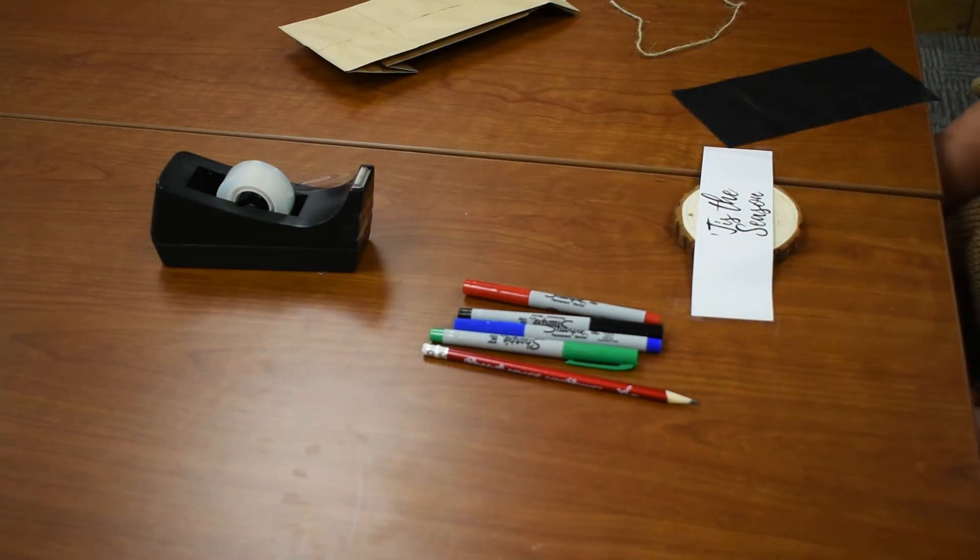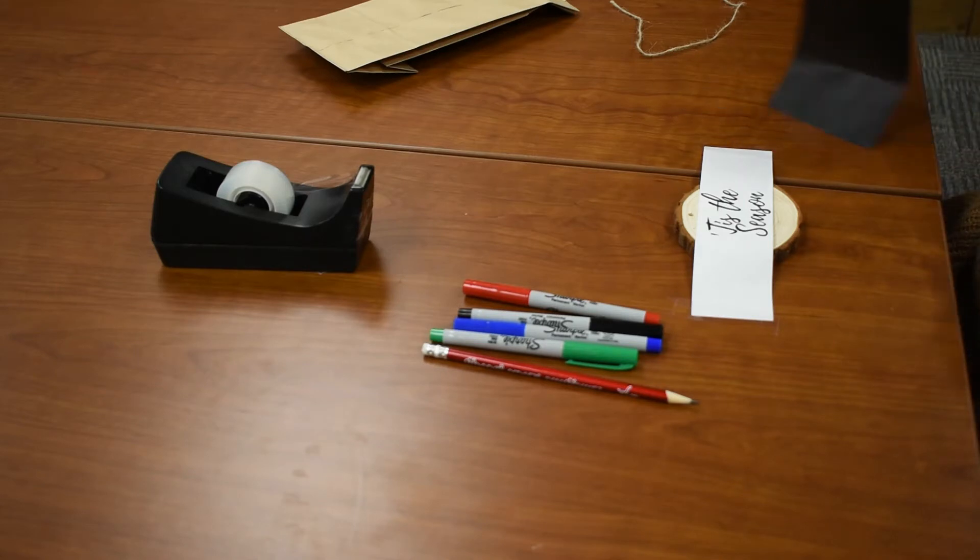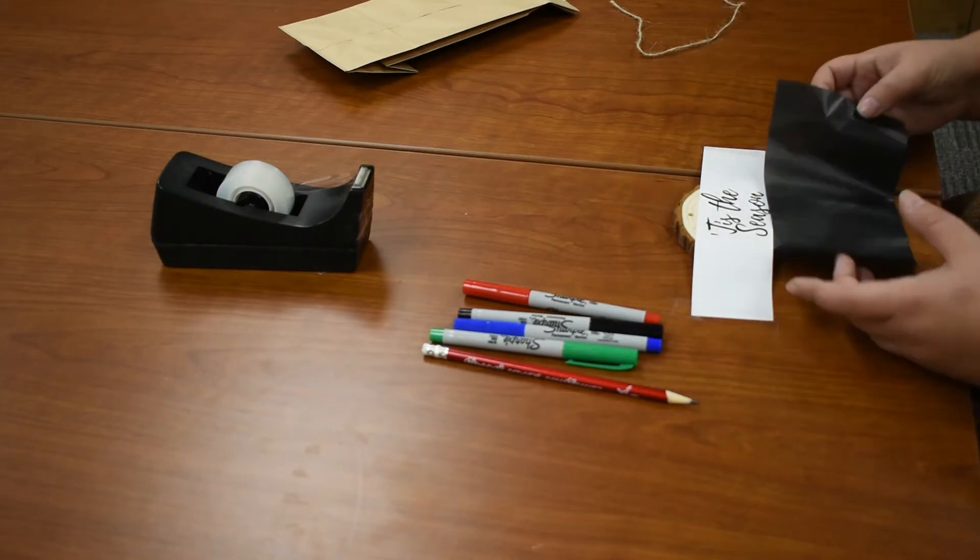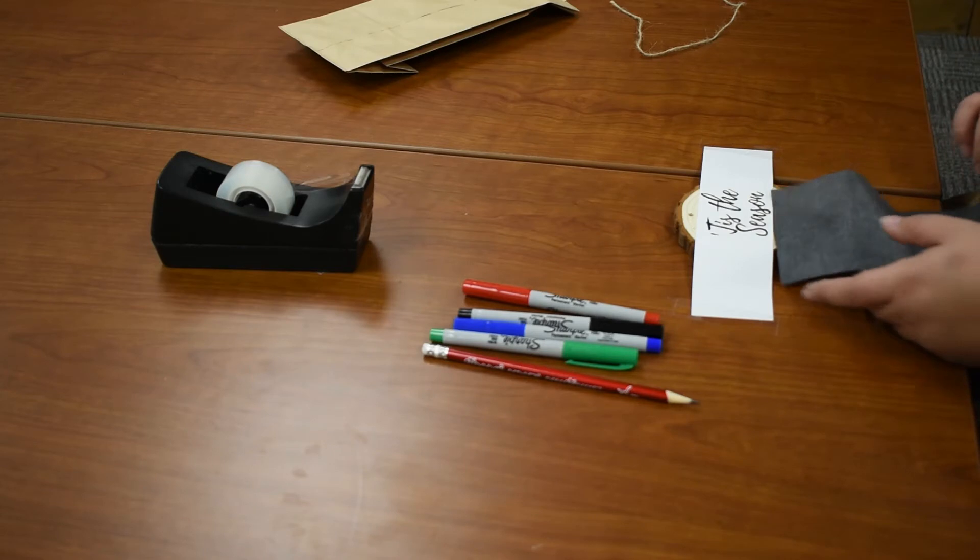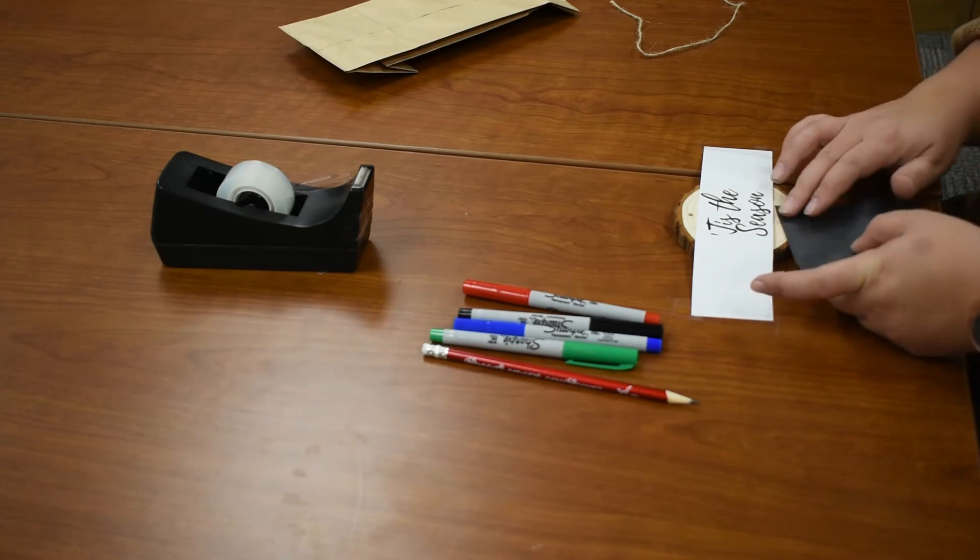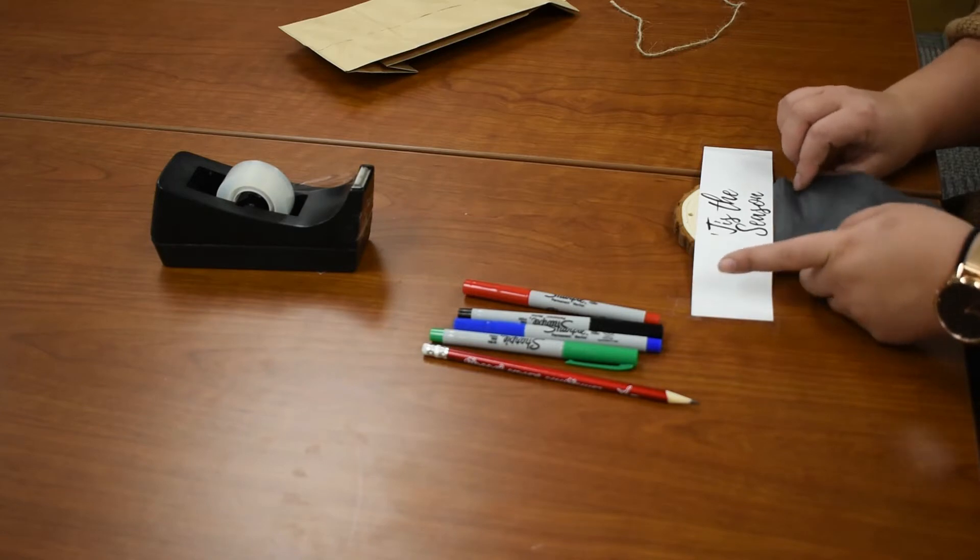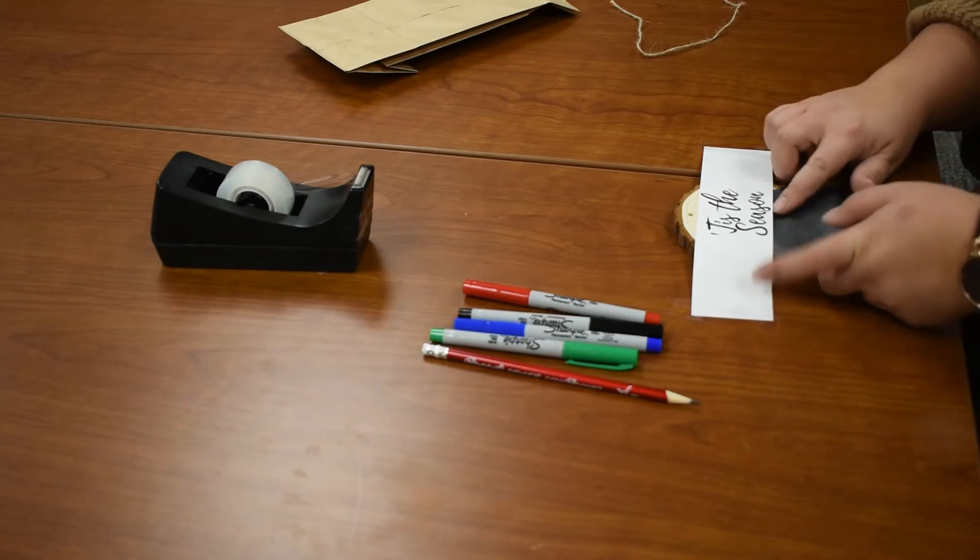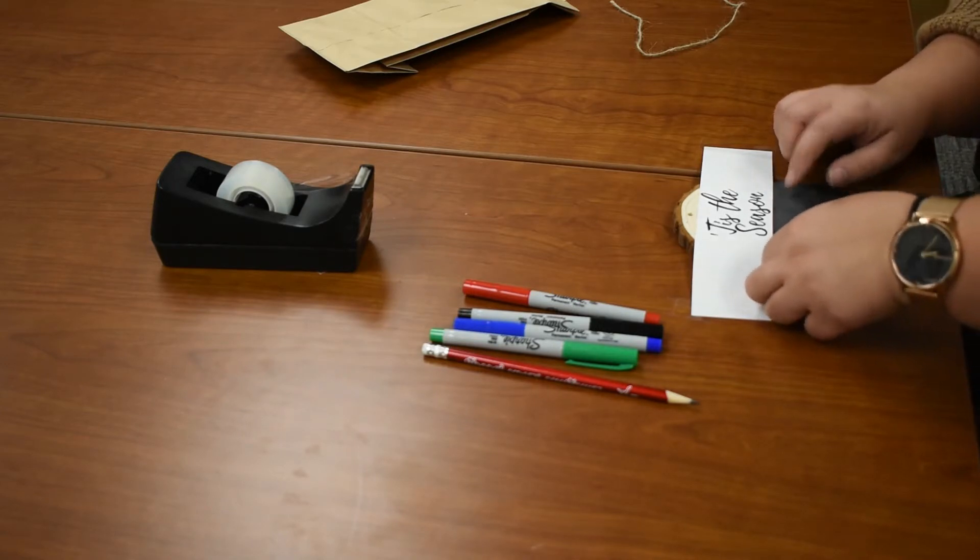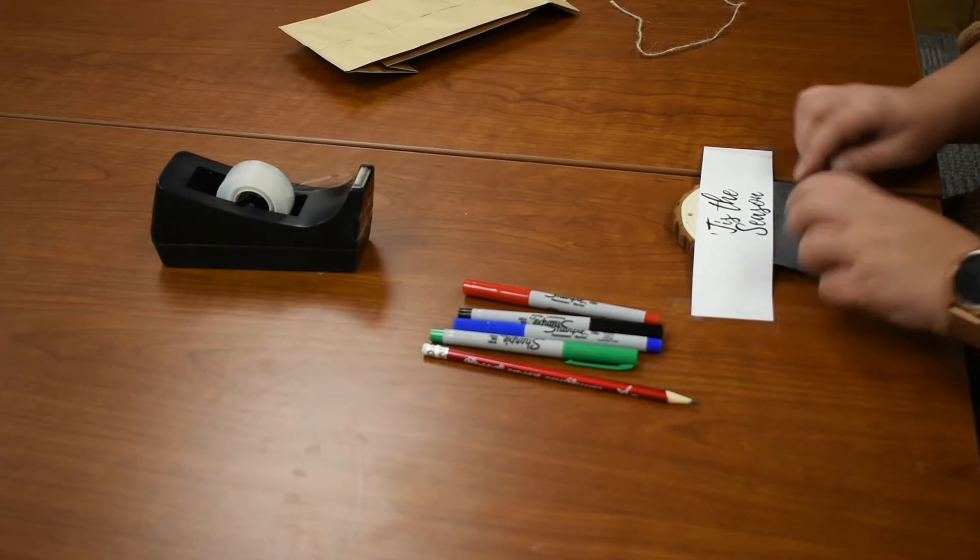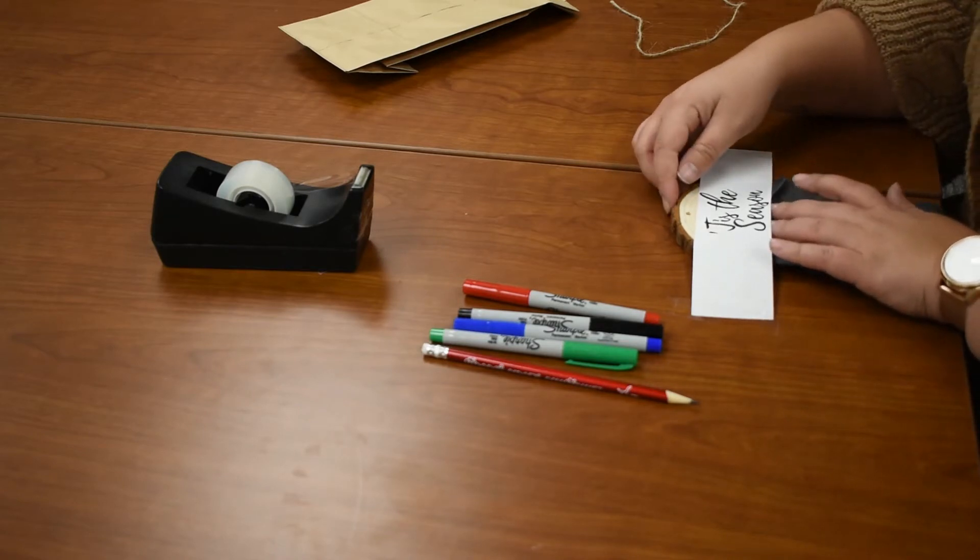Once you have that and you're happy with the placement, you need to take your transfer paper and make sure it is the dark side down. I would just slide that right underneath, or if you want to tape it down with your stencil. I found this was the easiest way to make sure I could see where the stencil was sitting on the piece of wood.